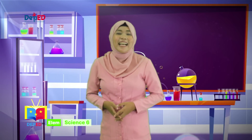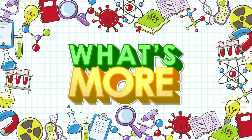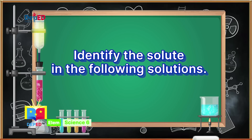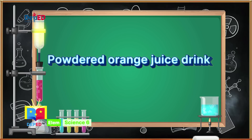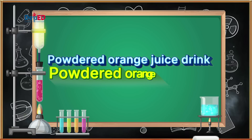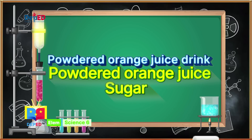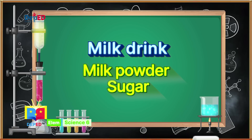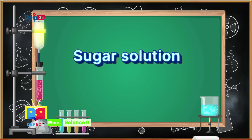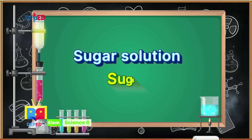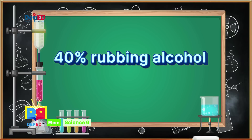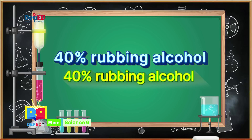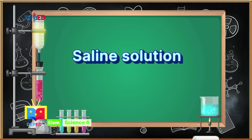Science-minded learners, let's have what's more! Identify the solute or solutes in the following solutions and write your answers on your paper. Number 1: Powdered orange juice drink — correct answer: powdered orange juice and sugar. Number 2: Milk drink — correct answer: milk powder and sugar. Number 3: Sugar solution — correct answer: sugar. Number 4: 40% rubbing alcohol — correct answer: 40% rubbing alcohol. Number 5: Saline solution — correct answer: salt.